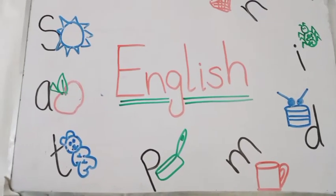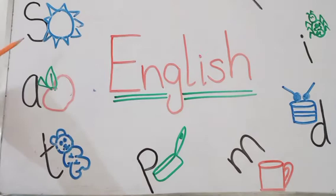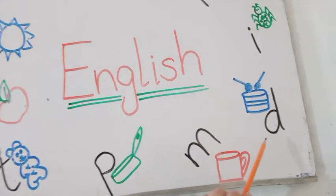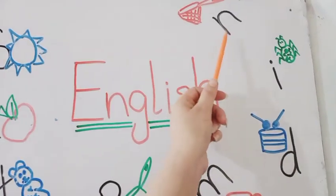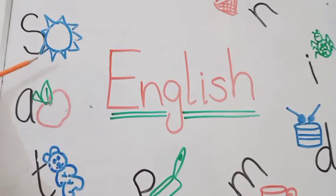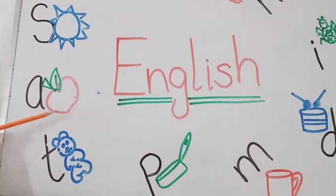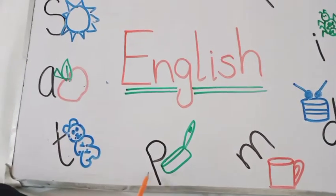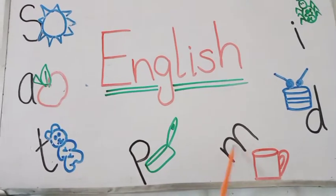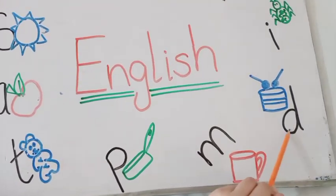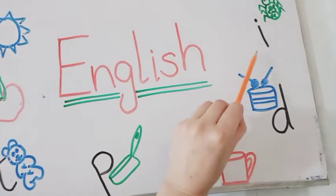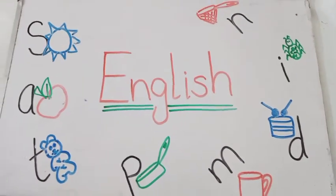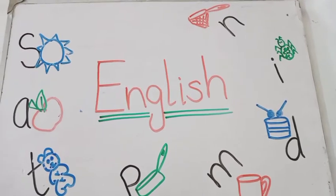In our phonics book, we learn the sounds S, A, T, P, M, D, I, and N. S as in sun, A as in apple, T as in teddy, P as in pen, M as in mug, D as in drum, I as in insect, N as in nut. These sounds are Book 1 and Book 2 sounds.